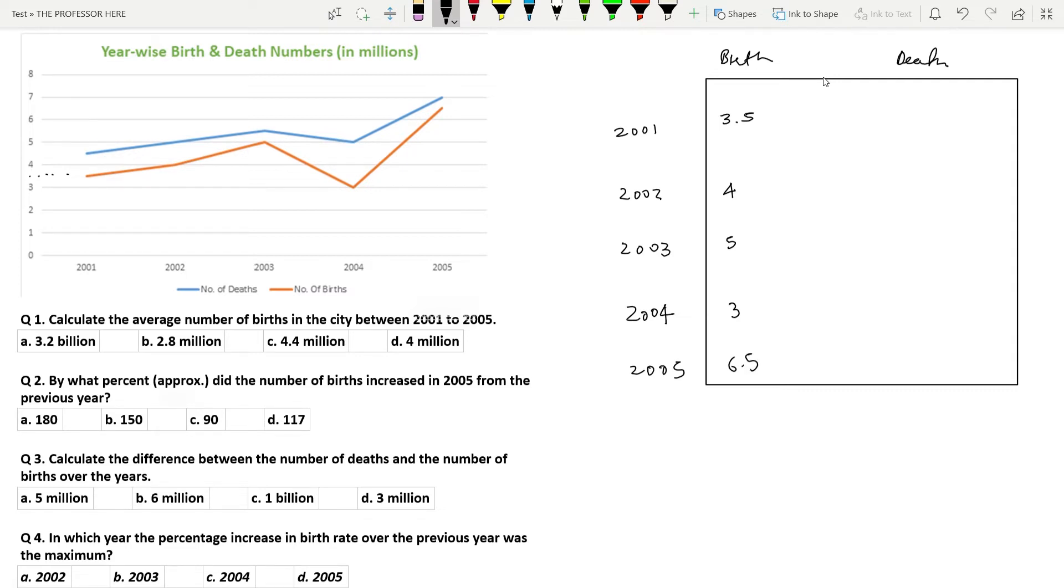Now let's fill up the death column which is represented by the blue line. In 2001, it is 4.5. 2002, it is 5. 2003, it is 5.5. In 2004, it becomes 5. And in 2005, it rises up to 7. So all the available data from the line chart has been converted into a table. Now let's try to solve the question.